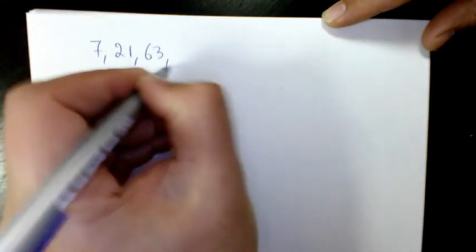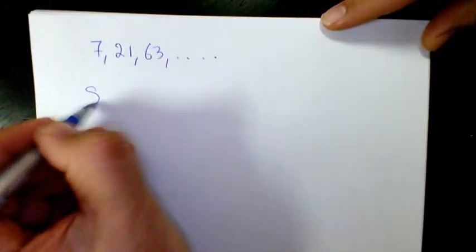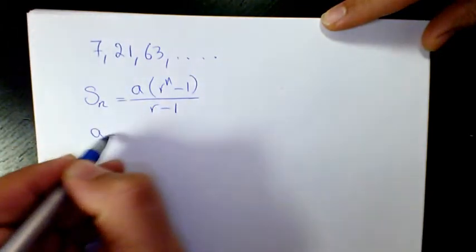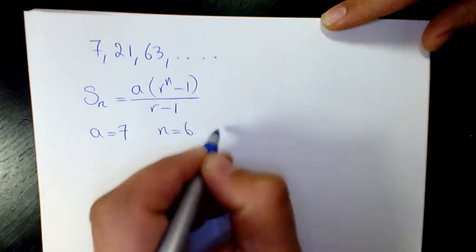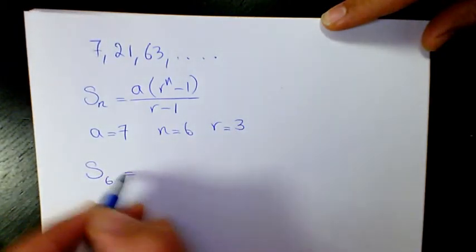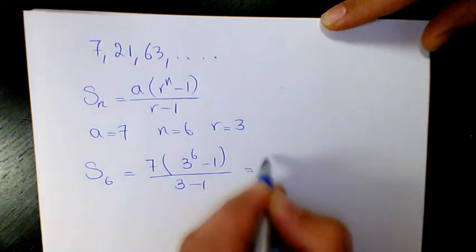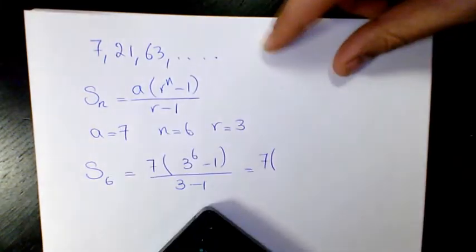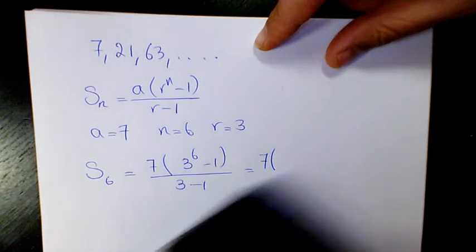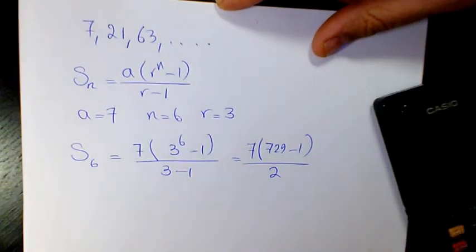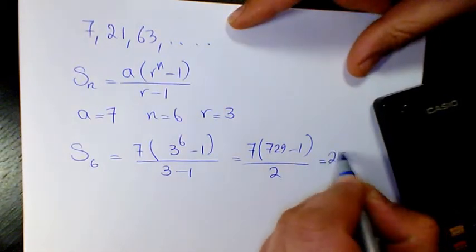Next: 7 + 21 + 63, and so on — find the sum of the first six terms. Using the formula a times (r to the power of n minus 1) divided by (r minus 1): a is 7, n is 6, r is 3. So S6 equals 7 times (3 to the power of 6 minus 1) divided by (3 minus 1). 3 to the power of 6 is 729, so 728 times 7 divided by 2 gives 2548.